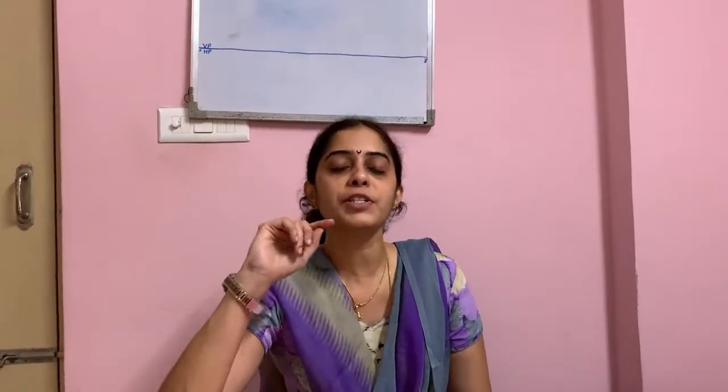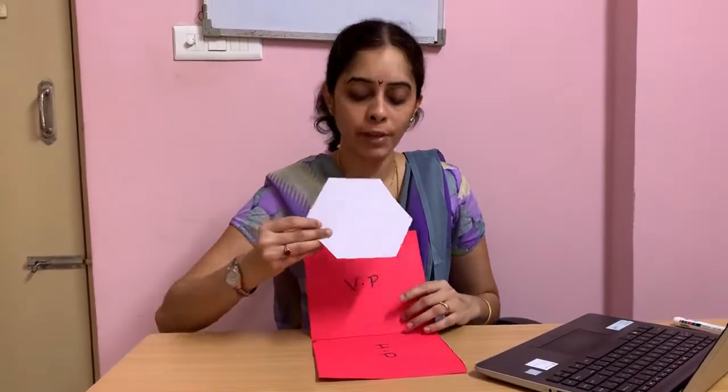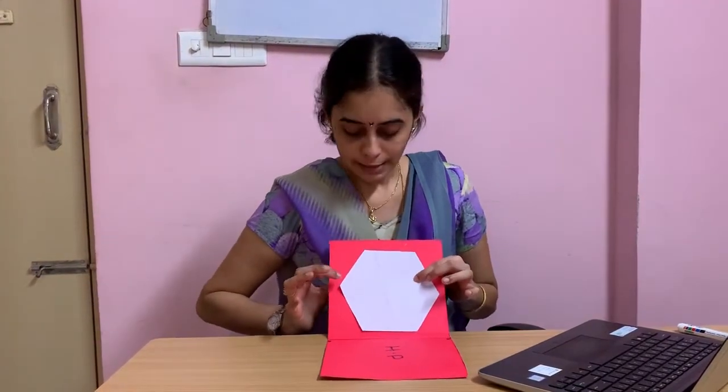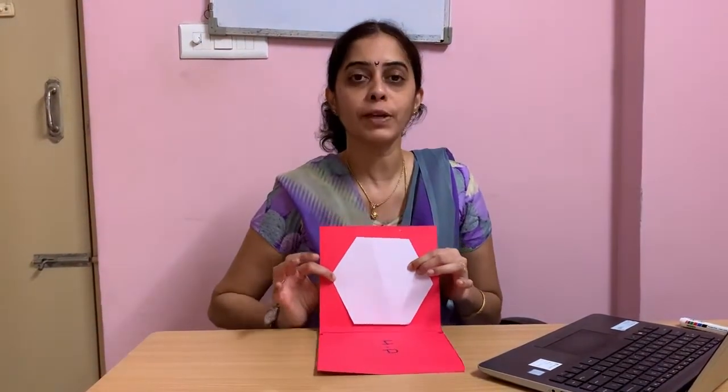Welcome back everyone. Today we are solving one problem on hexagonal lamina. It is resting in HP but with one of its corners on VP. If it is told resting in HP with one of its corners on HP, you show the lamina in the horizontal plane with the corner there. But since it is resting in HP with one corner in VP, you have to shift the position of the lamina so that it is resting with one of its corners on VP.